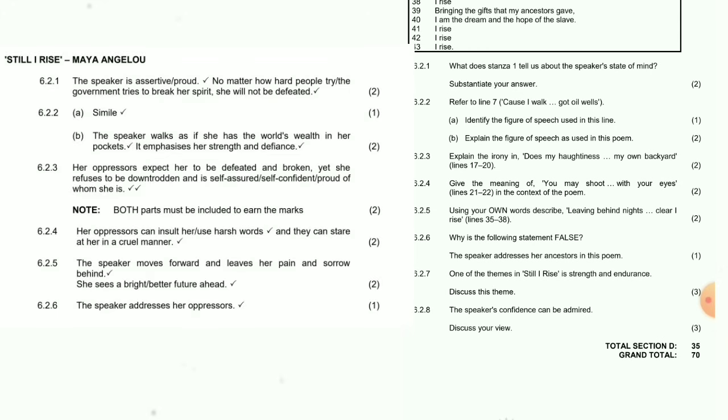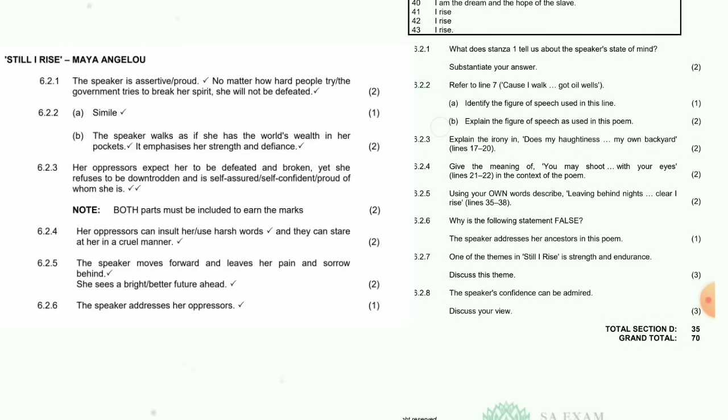Question 6.2.3: Explain the irony in lines 17 to 20 — 'Does my haughtiness offend you?' The answer is: her oppressors expect her to be defeated and broken, yet she refuses to be downtrodden and is self-assured and self-confident, proud of who she is. Question 6.2.4: Give the meaning of 'You may shoot me with your eyes,' lines 21 to 22. Oppressors can insult her, use harsh words, and stare at her in a cold manner.